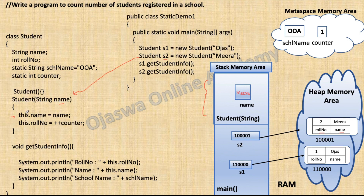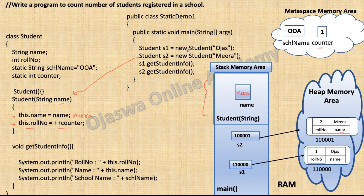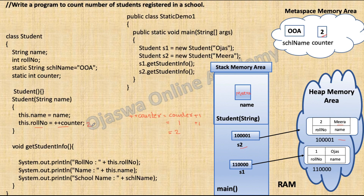Next, the code inside the parameterized constructor executes and instance variable name is assigned the value of local variable name. Hence 'Mira' will be stored inside the instance variable name belonging to object s2. The next statement is instance variable role number equal to ++counter. We are incrementing counter by one. Counter is a static variable and is shared by every object of the class, hence every object created will access the latest modified value. One student has registered so counter is 1; when the second student object is created, counter is incremented again to 2. The updated value 2 is assigned to instance variable role number of object s2.